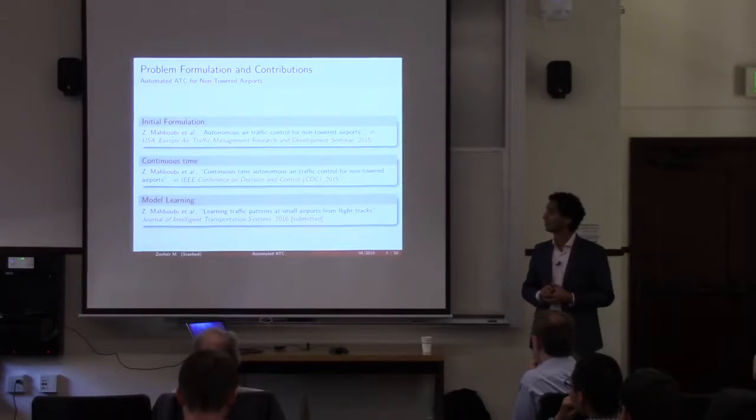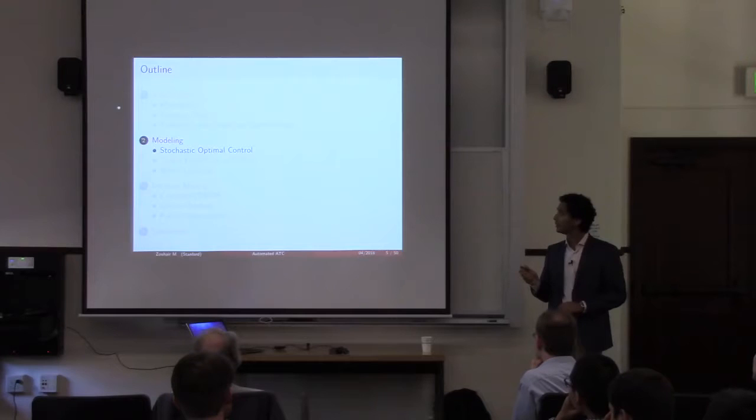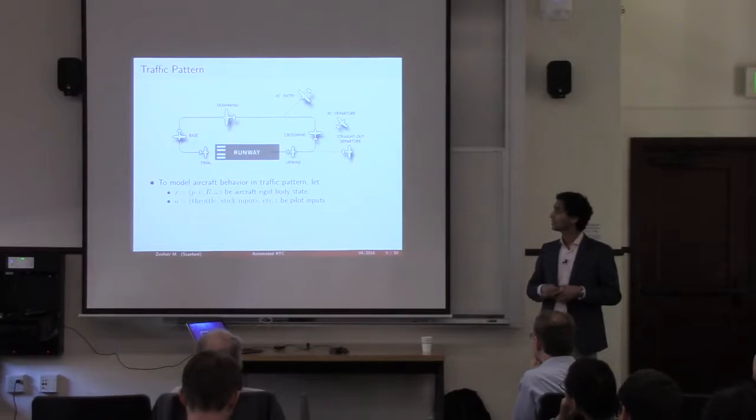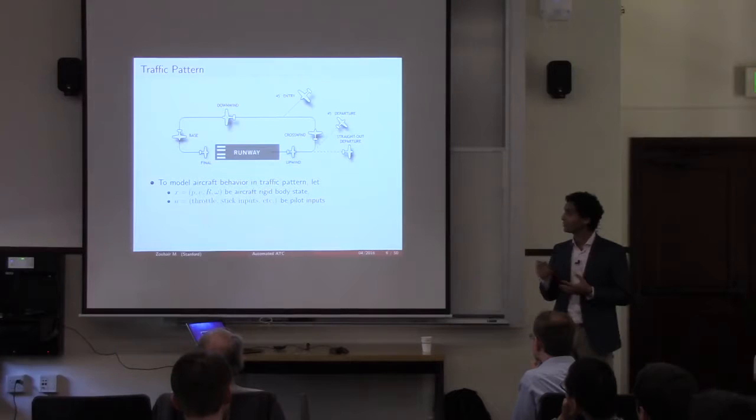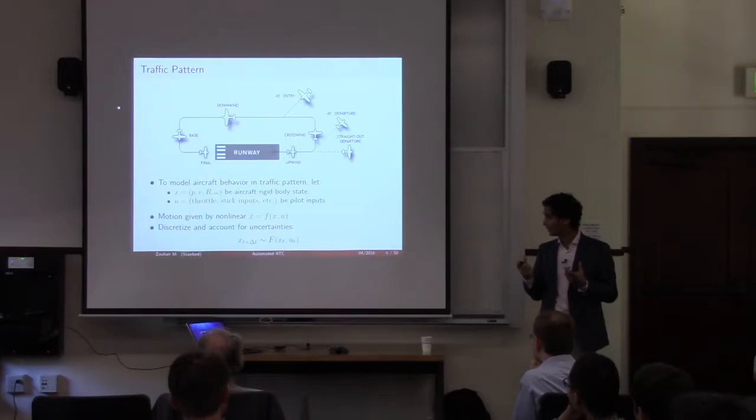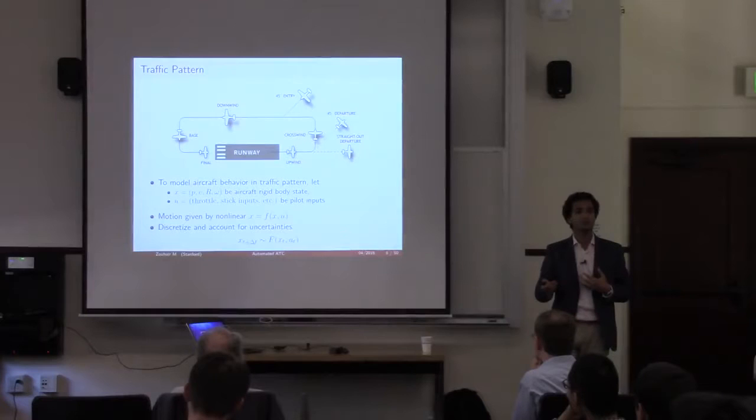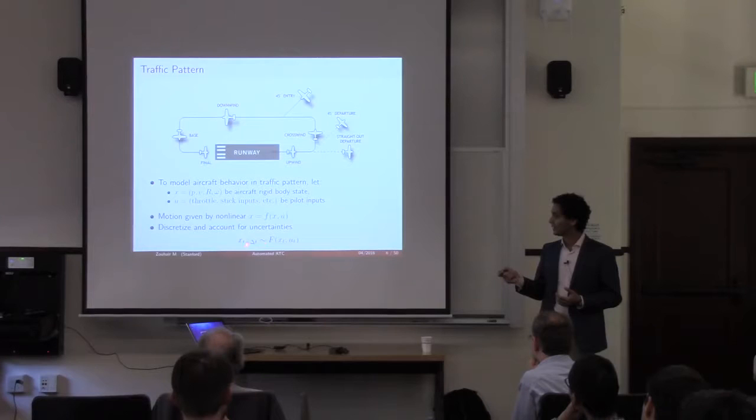Now let's jump into the actual modeling. We're trying to figure out how aircraft behave around the traffic pattern. Since we're modeling aircraft, it's natural to start by looking at rigid body states — position, velocities, orientation, and angular velocities. If we have the pilot inputs, we can put them into nonlinear equations and discretize them. Accounting for uncertainty gives us a probabilistic view: the state at the next time step is distributed by some function parametrized by the current state and pilot inputs.